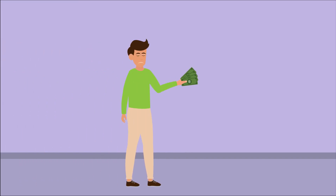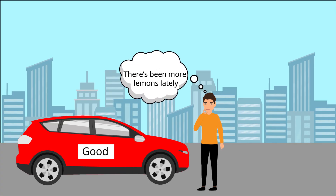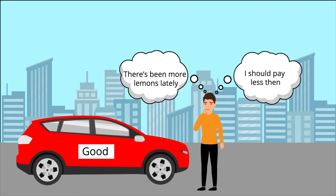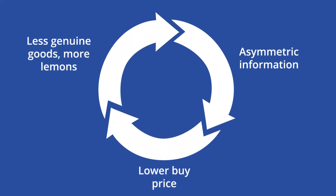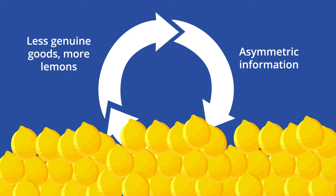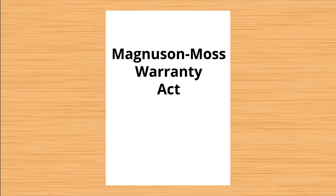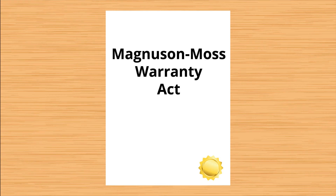Meanwhile, the market becomes more appealing to lemon sellers since they can still turn a reasonable profit. However, the buyer will eventually realize that it's become more difficult to get a good used car. In an effort to minimize their loss, buyers will lower the amount of money they're willing to pay. George Akerlof argued that this would create a feedback loop until the market became over-flooded with lemons but no quality cars and no one willing to buy used cars. A few years after Akerlof's paper, "The Market for Lemons," was published, the United States created federal lemon laws to help protect buyers. The Magnuson-Moss Warranty Act helped prevent manufacturers from using disclaimers on warranties to mislead customers.